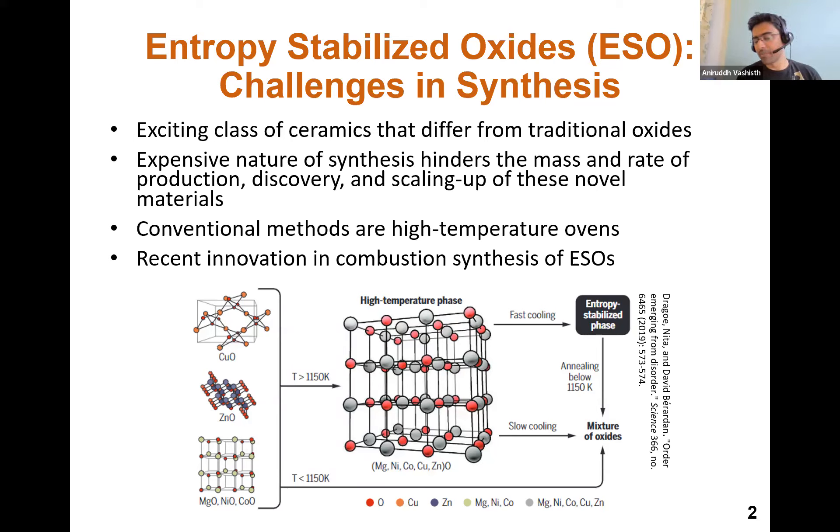Now, this is a really big hindrance to coming up with new chemistries, discovering new chemistries, and scaling up novel methods, because with the conventional methods, you use large ovens. The processing time can range from a couple of hours to seven to eight hours. And the recent innovations in combustion synthesis of ESOs has shown some way,